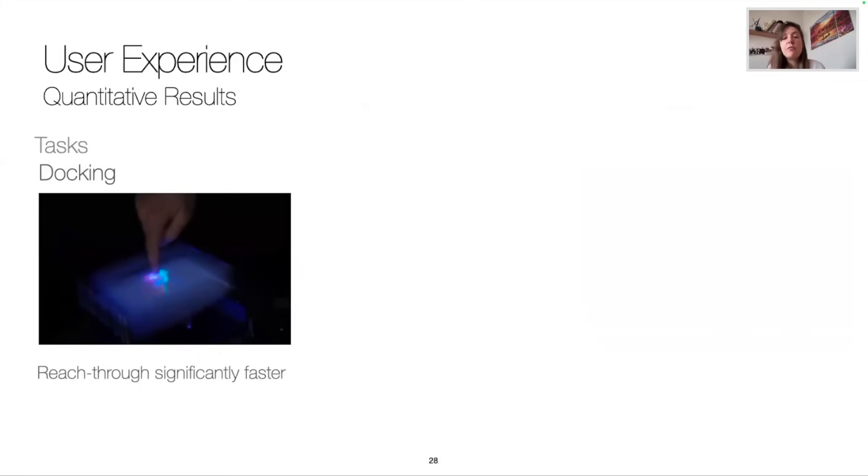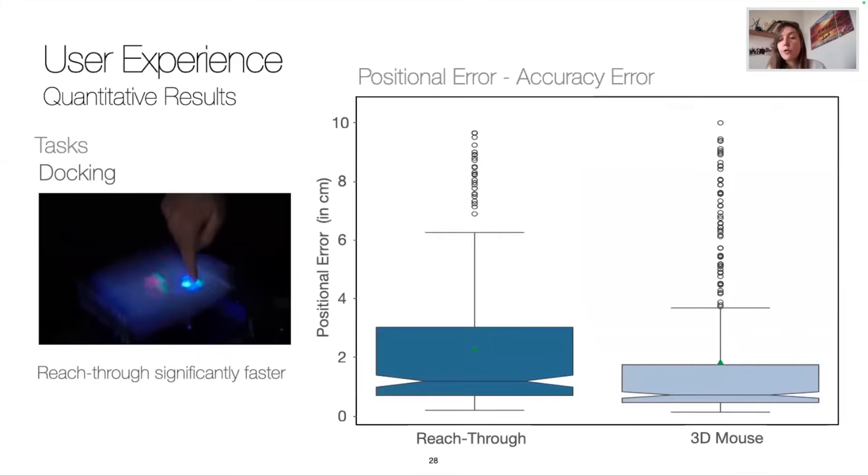For the docking task, reach-through was significantly faster. However, when looking at the positional error, the accuracy showed a small but significant effect in favor of the 3D mouse.